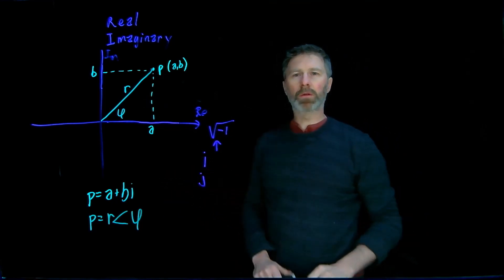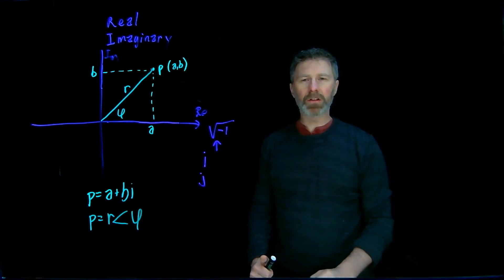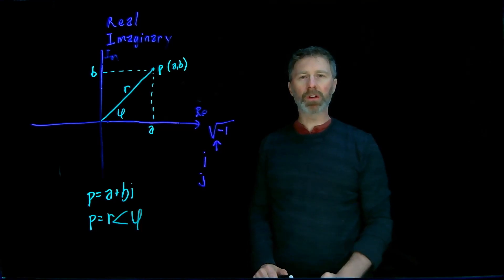So we have two different ways to represent that point, and if you take a look, you can see that the conversion between those two different methods of representing that point P is fairly simple with just a little bit of trigonometry.